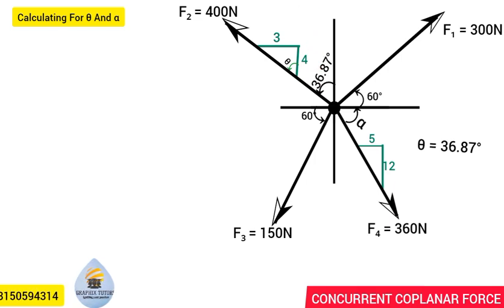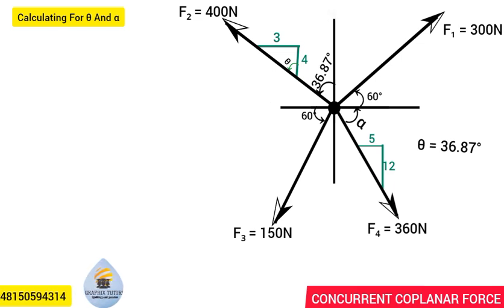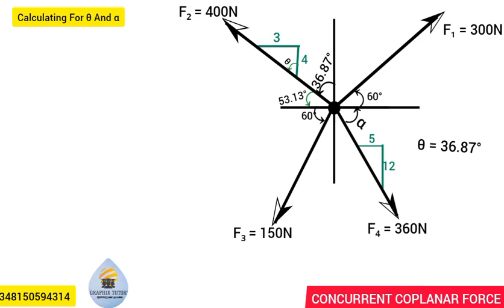Taking north and west as perpendicular references, the angle between north and west is 90 degrees. If we subtract 36.87 from 90, we get 53.13 degrees. So theta at that part of the diagram is 53.13 degrees. Summing 53.13 and 36.87 gives exactly 90 degrees, confirming our result.